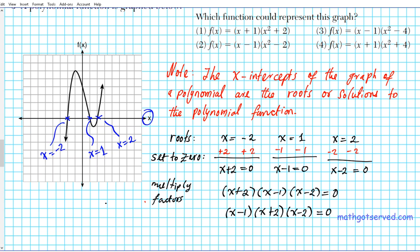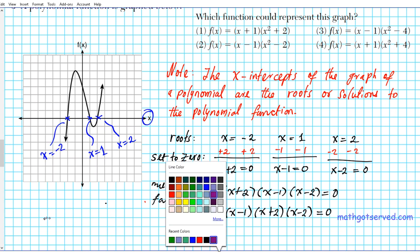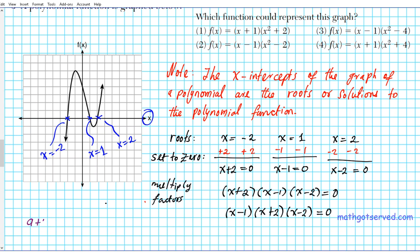Does order matter when multiplying factors? Post your answer in the comments — if it doesn't matter, what property of equality supports that? Now, x + 2 times x - 2 should remind you of a special factorization formula: (a + b)(a - b) = a² - b², the difference of squares. So x + 2 times x - 2 equals x² - 4.